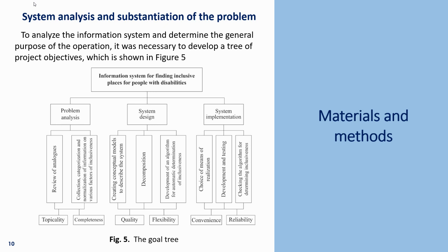Materials and methods. System analysis and substantiation of the problem. To analyze the information system and determine the general purpose of its operation, a goal tree of project objectives was developed, shown in Figure 5. The tree covers an information system for finding inclusive places for people with disabilities, splitting into problem analysis, system design, and system implementation — further divided into reviews, categorization, conceptual models, decomposition, algorithm development, choice of implementation means, development and testing, and quality, flexibility, convenience, and reliability criteria.